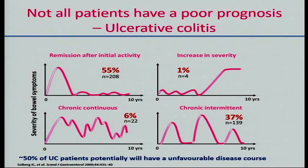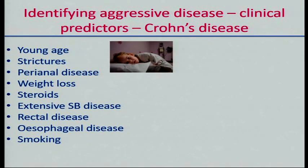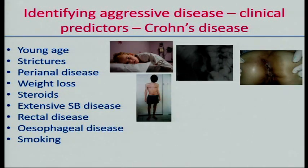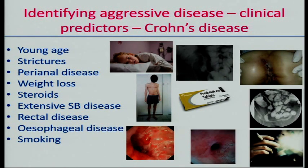The problem is that we're just not very good at identifying those patients with a poor prognosis. We rely largely for Crohn's disease on clinical features — patients diagnosed at a young age (meaning under 40), presenting with strictures, perianal disease and weight loss, those who need steroids, those with excessive small bowel disease, rectal disease, esophageal disease, or smokers, all have a poor prognosis. The message is that this actually encompasses rather a lot of our patients.